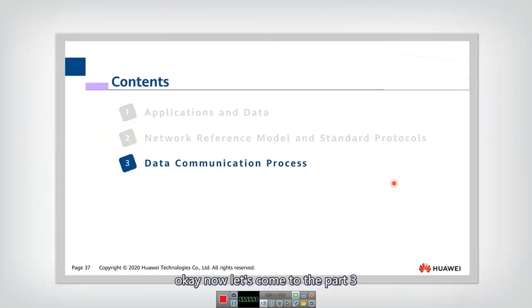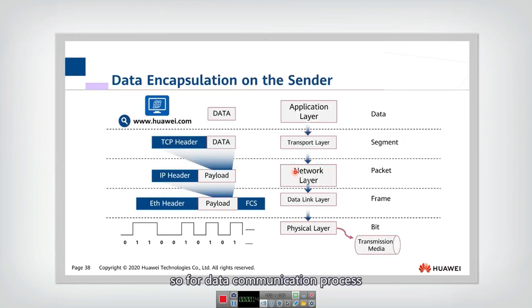Okay, now let's come to part three. We will introduce the data communication process. For data communication process, we will introduce the process in the sender, in the middle, and in the receiver.